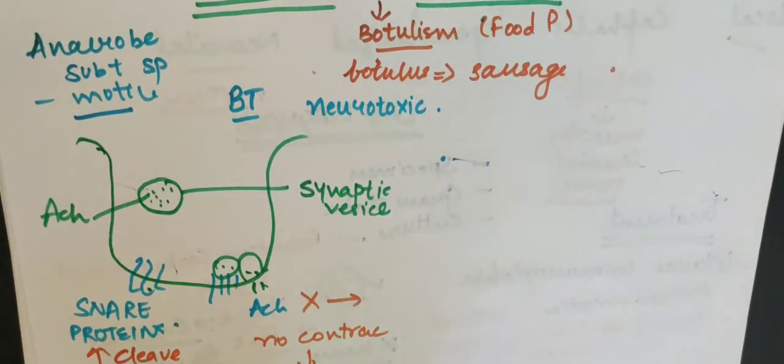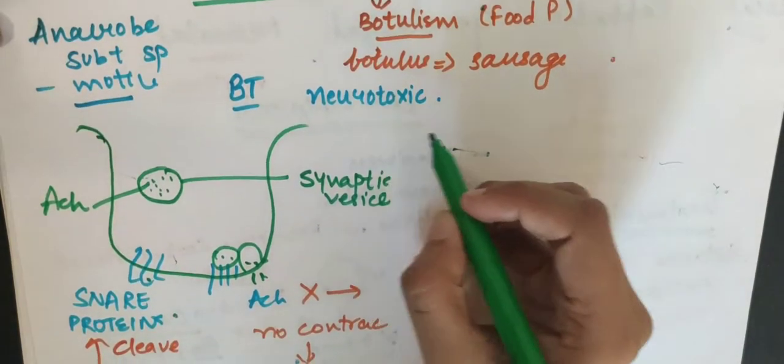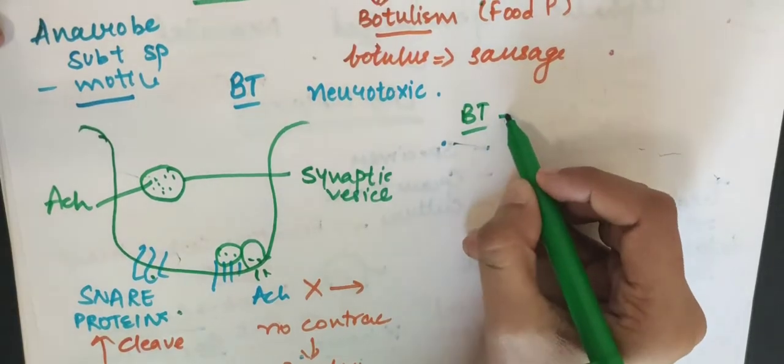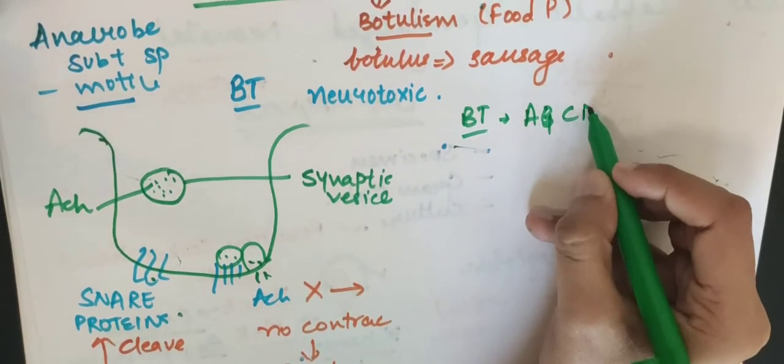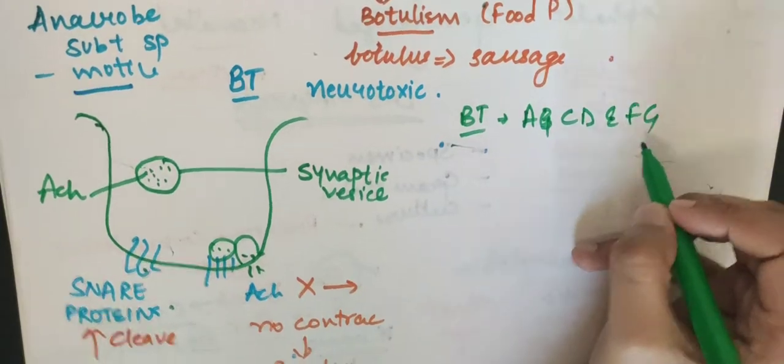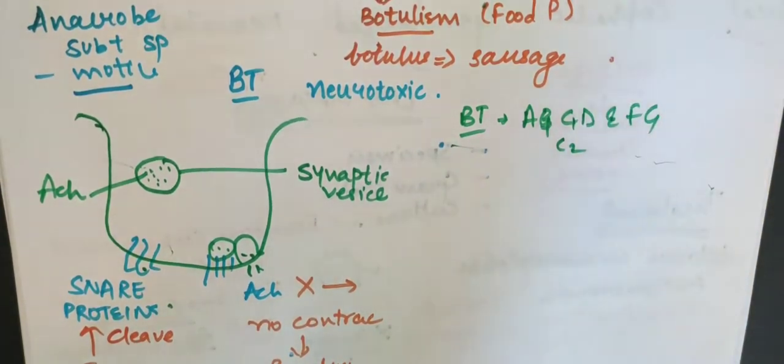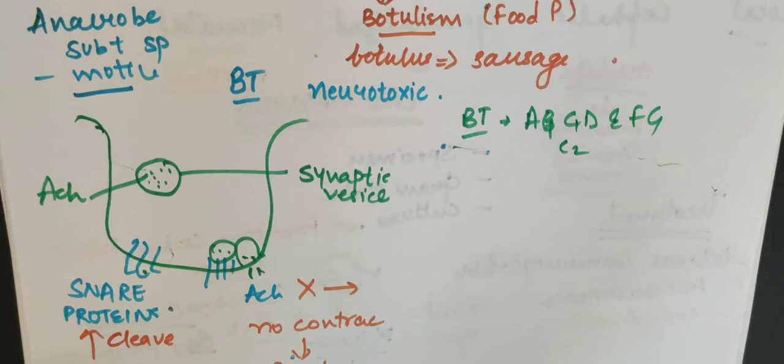Now what is our botulinum BT toxin? It has eight serotypes: A, B, C, D, E, F, G - C1, C2. Eight serotypes.